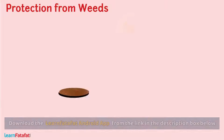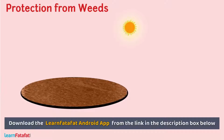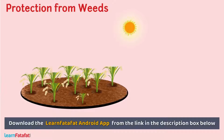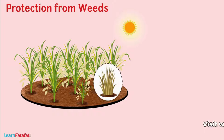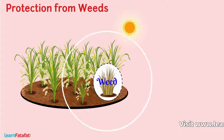In the cropland, along with desired crops, many other undesirable plants grow naturally. In the fields, all plants other than crop plants are called weeds.